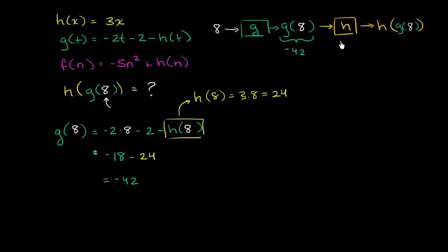And now we can input negative 42 into h. So h of, let me do it right over here, h of negative 42. Remember, negative 42 is the same thing as g of 8. So h of g of 8 is the same thing as h of negative 42. This is going to be equal to 3 times negative 42, which is equal to negative 126.